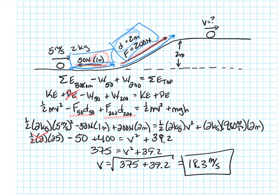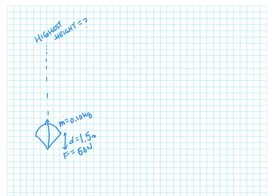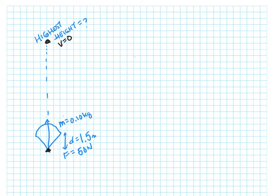Let's try one more example problem. I've got a bow and arrow, and I'm going to shoot this arrow that's 0.1 kilograms until it gets to its highest height — and I want to know what the highest height is. I need to find two locations to compare where I know the height and velocity. One location will be here at the very bottom, the other at the very top. The reason I picked the top is because at the highest height, the velocity equals zero. And at the bottom, I'm pulling back the bow — that's at rest and at the lowest height.